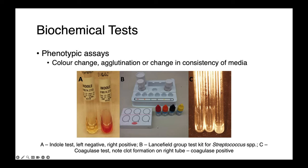In the center here, we have the Lancefield group test kit for Streptococcus species. What we're looking for is an agglutination reaction. We have these antisera which are able to agglutinate different surface antigens on streptococci, leading to clumping that we can visualize on these cards. And then on the far right, we have an example of the coagulase test. In this assay, we have some rabbit plasma that we inoculate with different Staphylococcus species.